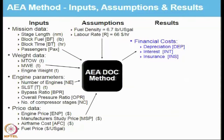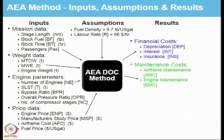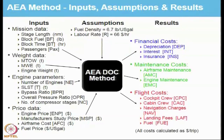The results of the AEA method are in terms of various cost elements. The first is the financial cost, or cost of financing the operation of the aircraft, which includes depreciation of the aircraft, interest on money borrowed to purchase the aircraft, and insurance on the hull. There are also maintenance costs for the airframe and engine. Then there are costs associated with the flight itself: cockpit crew, cabin crew, navigational charges, landing fees, and fuel. Symbols like DEP, INT, INS, CPC, etc. are given for each item.